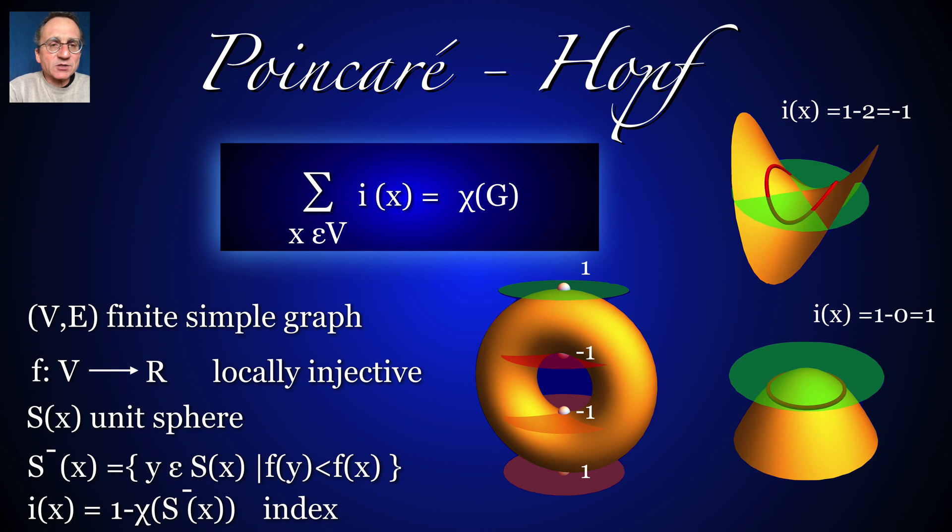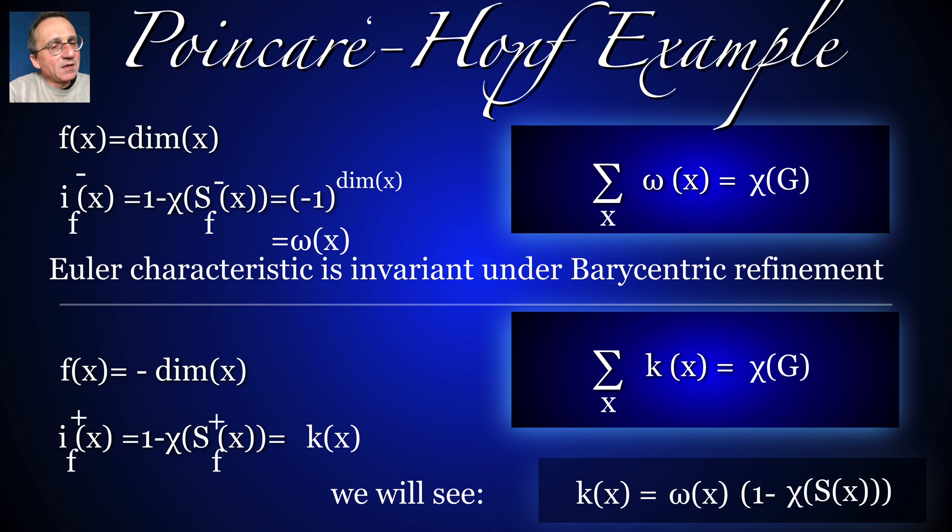So here's the Poincare-Hopf theorem. For any locally injective function on the vertex set of a graph, there is an index given as 1 minus Euler characteristic of the stable sphere. And then by induction, one can show that the sum of the indices is the Euler characteristic. And in the special case, if we take the dimension on the graph that comes from a simplicial complex, then the dimension function is a locally injective function. And in that case, we just get that the sum of the omega x is the Euler characteristic, which tells that the Euler characteristic of the barycentric refinement graph is the same as the Euler characteristic of the original simplicial complex.